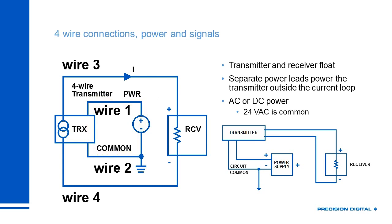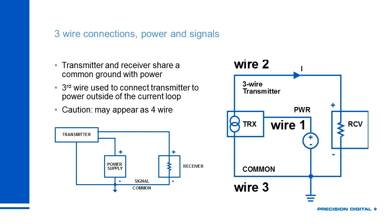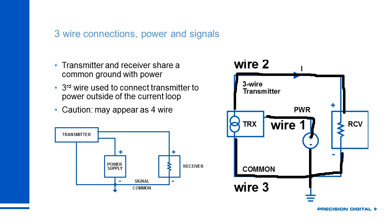A three-wire device is essentially the same as a four-wire device but without isolation. The 4 to 20 milliamp loop is not floating relative to the power supply. A three-wire transmitter has: wire one bringing in power, wire two carrying the 4 to 20 milliamp output to the receiver, and wire three shared between the receiver return and the power supply common — they are literally the same connection. Some three-wire devices have four terminals to make wiring easier, but electrically it's the same node.